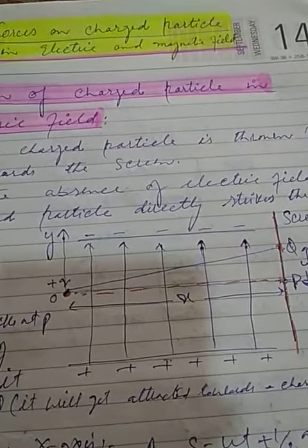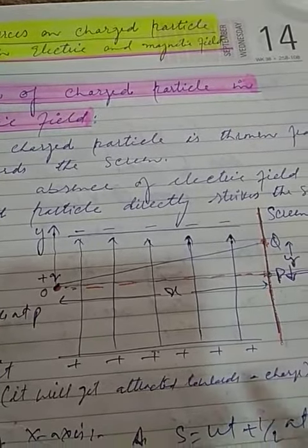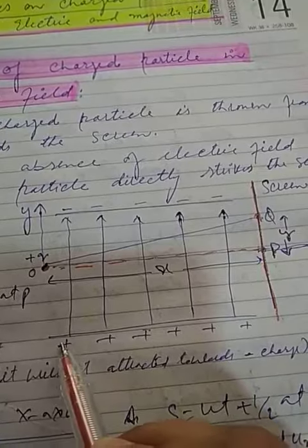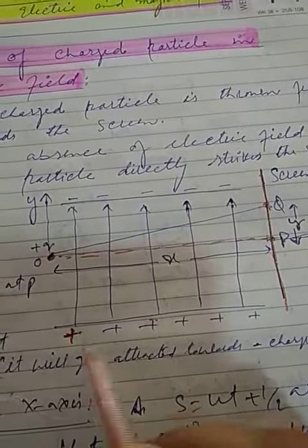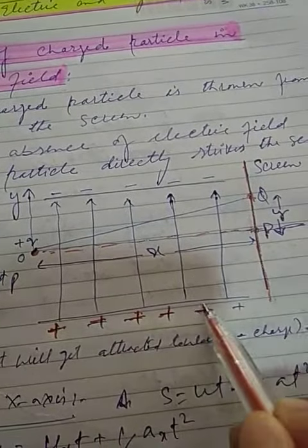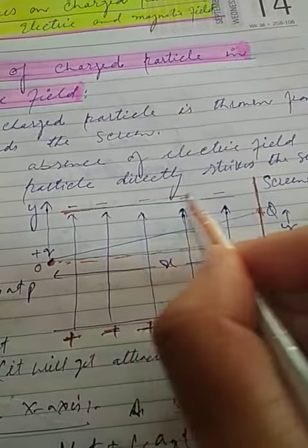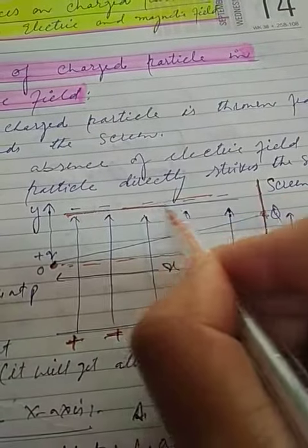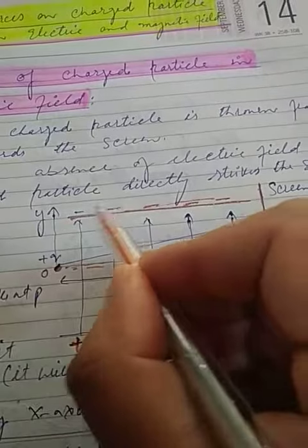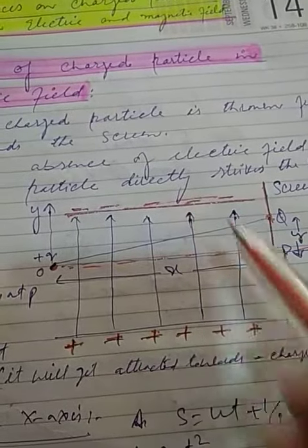Now we will apply the electric field. Here you can see it is the positive plate, and here it is the negative plate. So an electric field is generated, and the direction of the electric field is from the positive plate towards the negative plate.